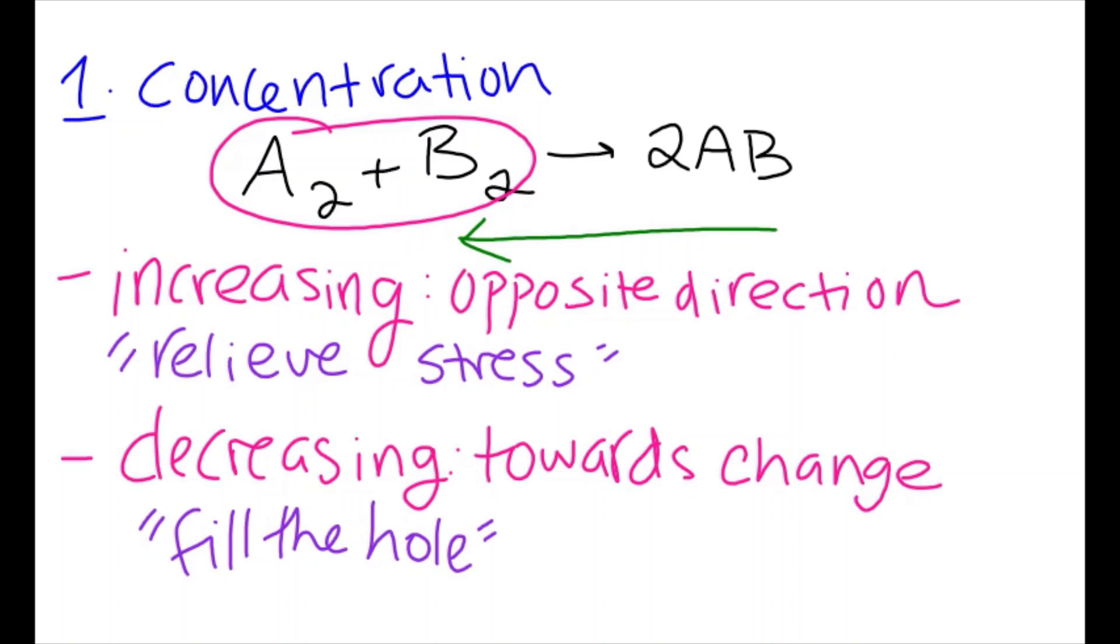Therefore, a decrease in either concentration of A or B will cause a shift to the left, where the new hole occurs, while a decrease in AB will cause a shift to the right, again to fill these holes up.